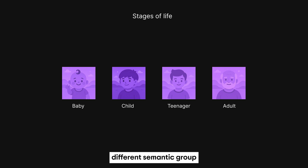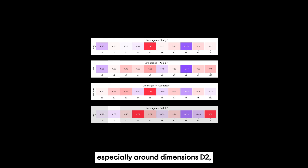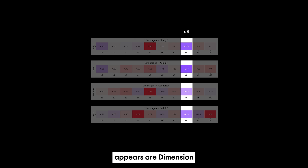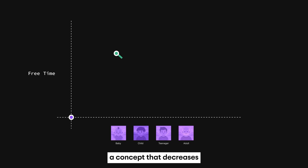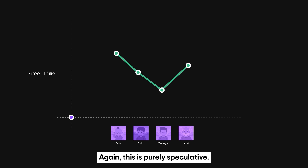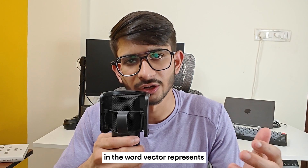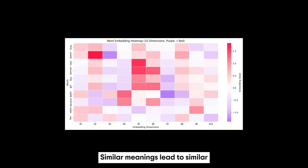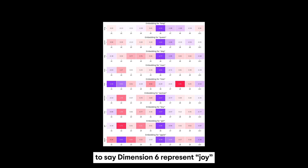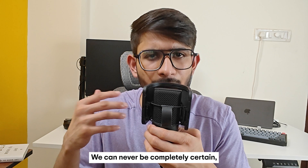Analyzing human life stages — baby, child, adult, teenager — these words have notably similar vectors, especially around dimensions d2, d3, and d5. At dimension d8, baby has a value of 1.30, child 1.17, adult 0.79, and teenager 0.98 — a descending trend that could hypothetically relate to available free time decreasing from childhood to adulthood. A common misconception is that each dimension represents a specific interpretable trait like gender, age, or positivity. Embeddings are learned in an unsupervised way and dimensions are not explicitly labeled. Interpretability comes from relative comparisons, not absolute values — these are merely hypotheses formed from visual patterns and domain knowledge.